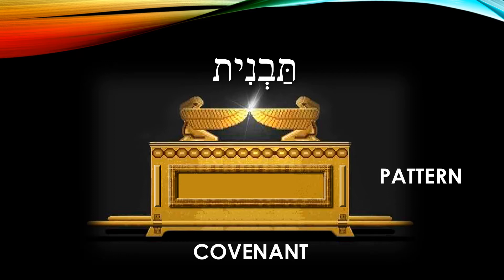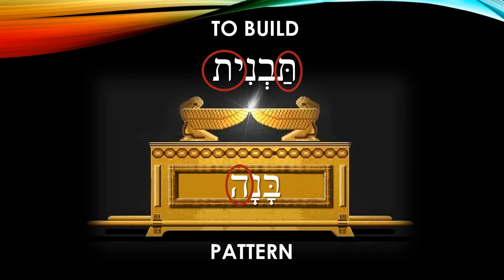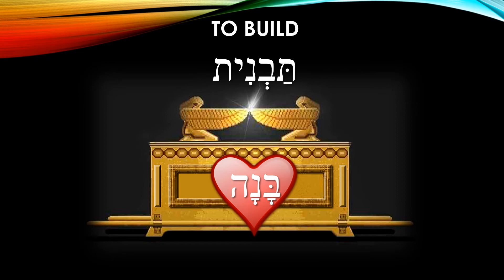The root of Tavnith is Banah. This is a primitive root that means to build, literally and figuratively. From the root word, we see that the He has been removed, and then the Tav on the prefix and the Yod-Tav on the suffix has been added. This root, which is the heart of the Father and relates to our heart and center, is a word that is static — full of potentiality, but it must be activated, acted upon. It will only be acted upon if the Spirit reveals it to us.